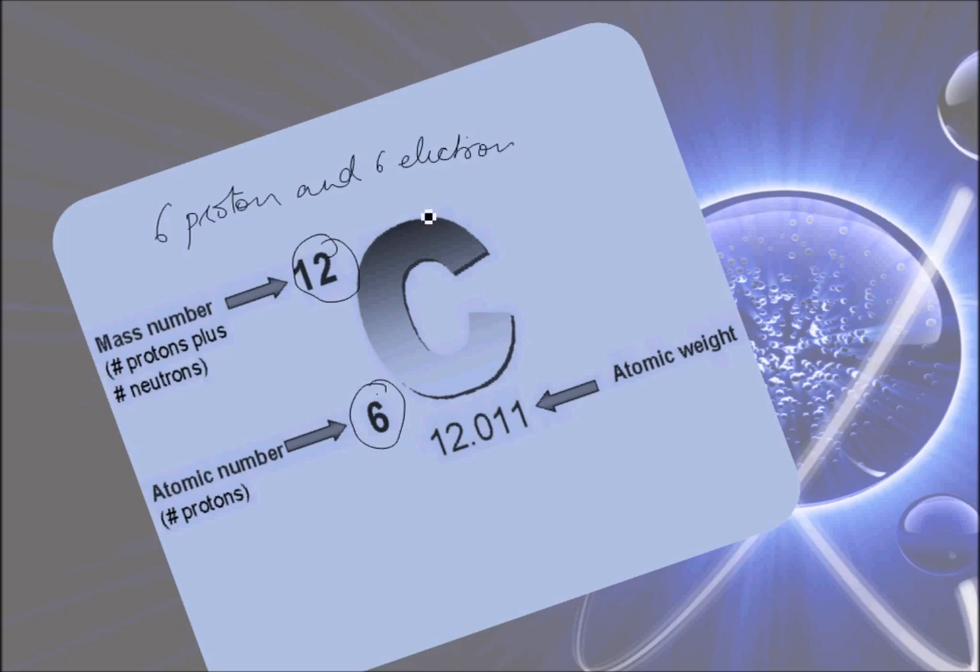The 6 protons make the atomic number, and the mass number is 12. So how does the 12 sum up? As we know there are only 6 protons in carbon, so what is the extra 6? Where do these unknown particles come from?